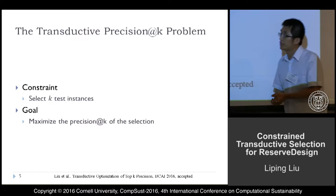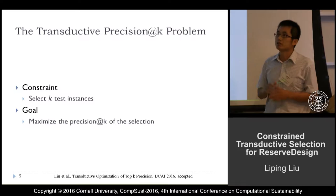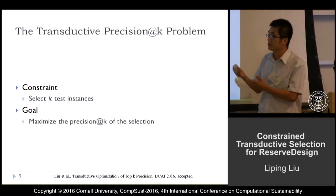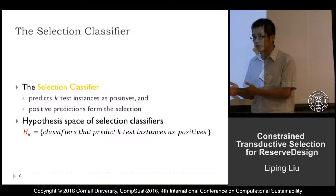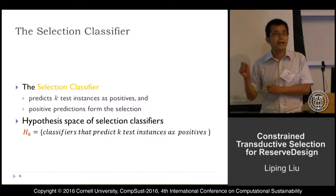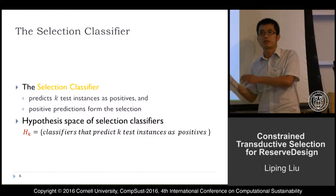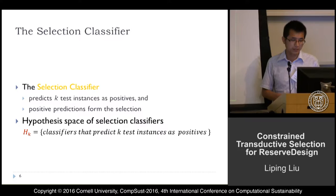Let's see a special case of this problem, where we use a very simple constraint: we only select k land parcels from the planning area, and the goal is to maximize the number of positive land parcels selected — equivalently, to maximize the precision of this selection. For this special case, we have invented the TTK method. Our learning model is a selection classifier, which directly predicts k land parcels as positive. These land parcels directly form our final selection. The hypothesis space of this selection classifier is H_k.